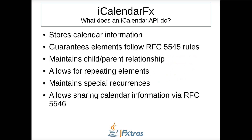An iCalendar API has the following jobs. First and foremost, it stores calendar information such as events and to-dos. It also guarantees that calendar elements are valid — for example, it ensures value types are correct and required elements are present. It maintains child-parent relationships, meaning the API provides connections between related calendar elements. It provides functionality for repeating elements by the recurrence rule.